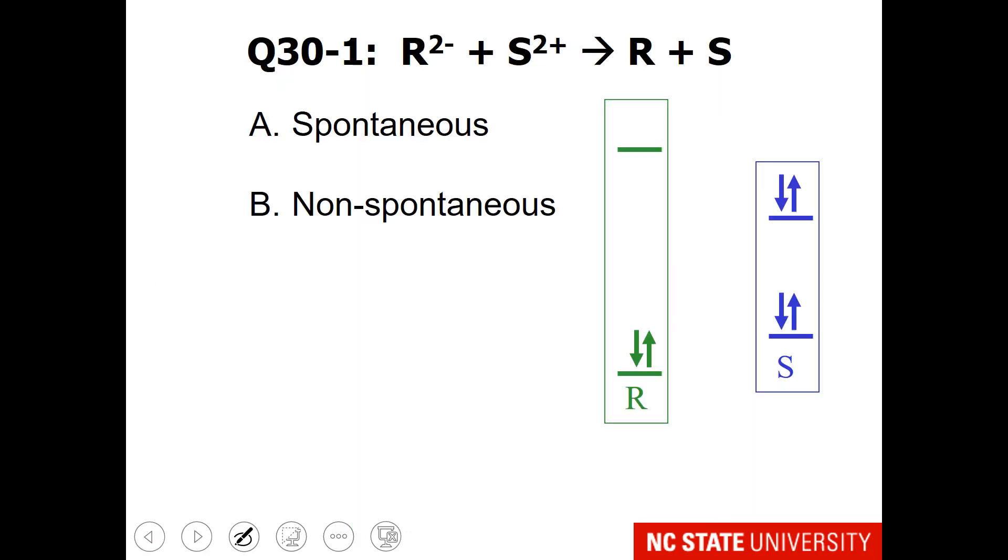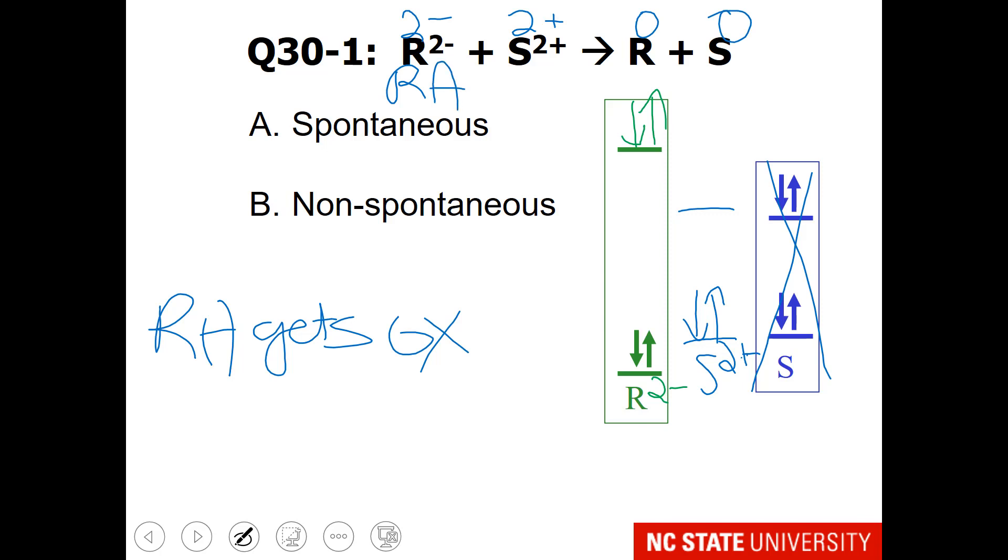So here are your student questions. I simply want to know spontaneous or non-spontaneous, but to get there, you're going to have to identify the reducing agent and the oxidizing agent. I'm going to help you by making this R2 minus, and I have now drawn for you S2 plus. Remember that the reducing agent gets oxidized. That is why I think R2 minus is the reducing agent, because it is going from minus two to zero, so it is going up in oxidation state. I'll let you finish the rest of this and make your choice.